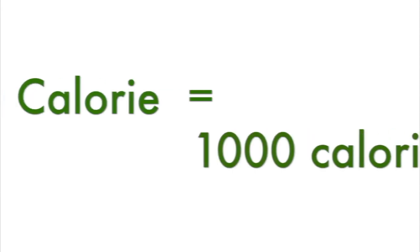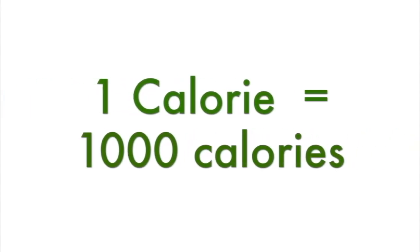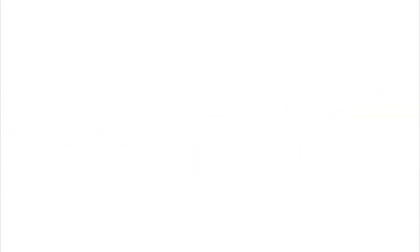Here's the weird part. The physics and chemistry unit calorie, as we've defined it, is written with a lowercase c. The nutrition facts on food are labeled in calories written with a capital C. This is an important difference — the capital C calorie is actually 1,000 lowercase calories.